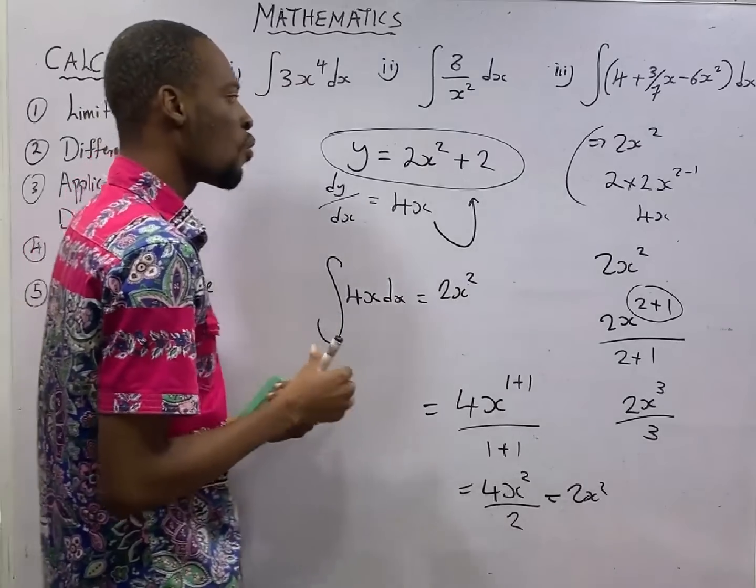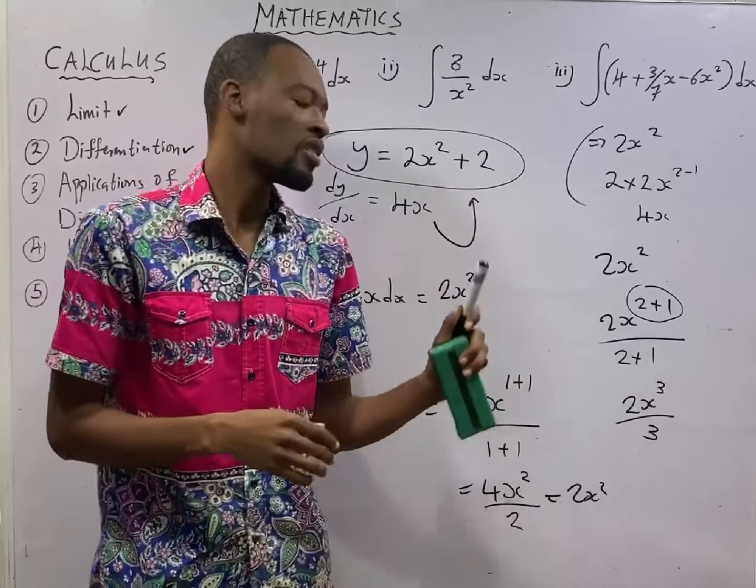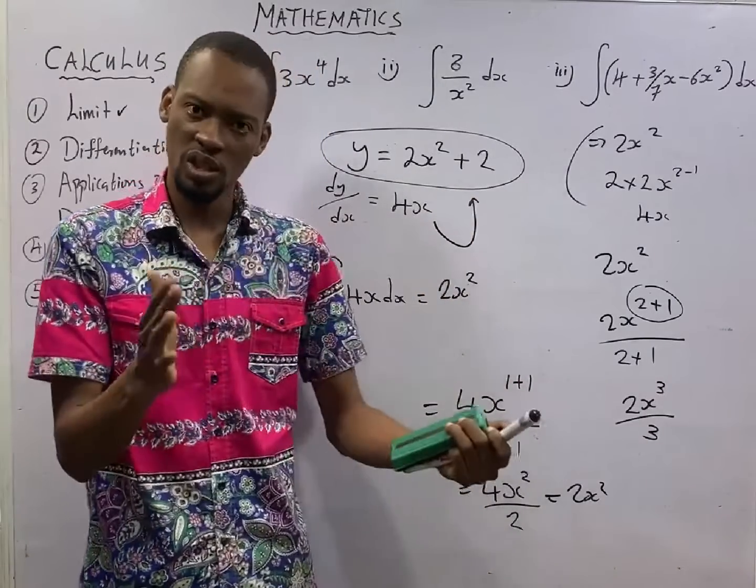You know that, once you differentiate a constant, you will get 0. So, it is missing. In integration, we need to account for the constant.